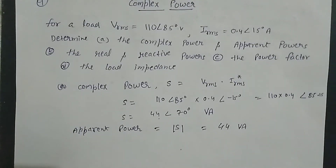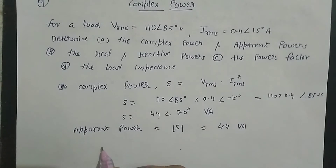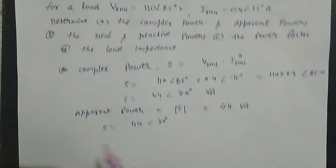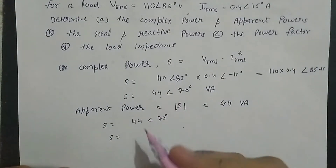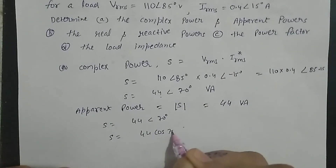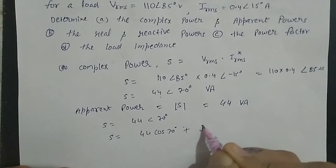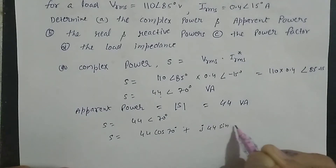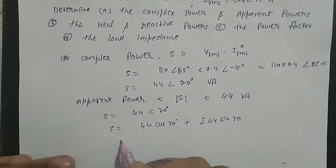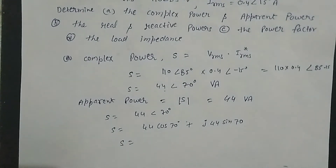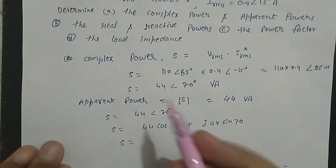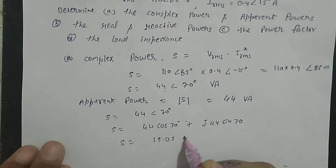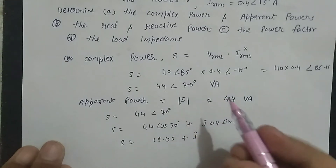Real और reactive power निकालने के लिए S = 44∠70° को rectangular form में change करेंगे। S = 44cos70° + j·44sin70°। यह calculate करने पर आएगा: 44cos70° = 15.05 और 44sin70° = 41.35।